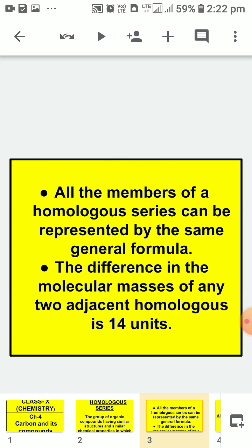An important property of the homologous series is that all the members can be represented by the same general formula. For alkanes the formula is CnH2n+2, for alkenes it is CnH2n, and for alkynes the formula is CnH2n-2.